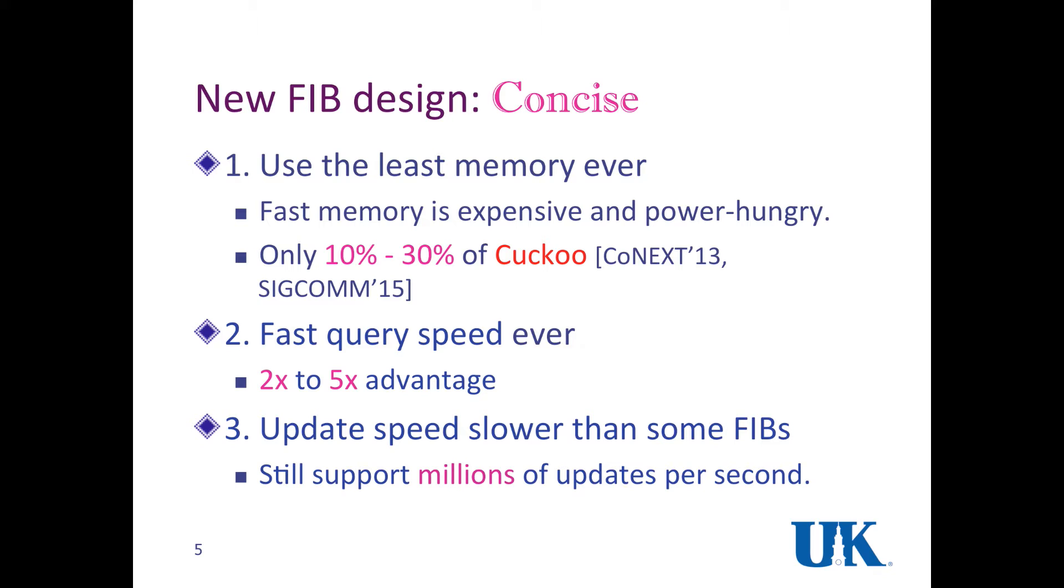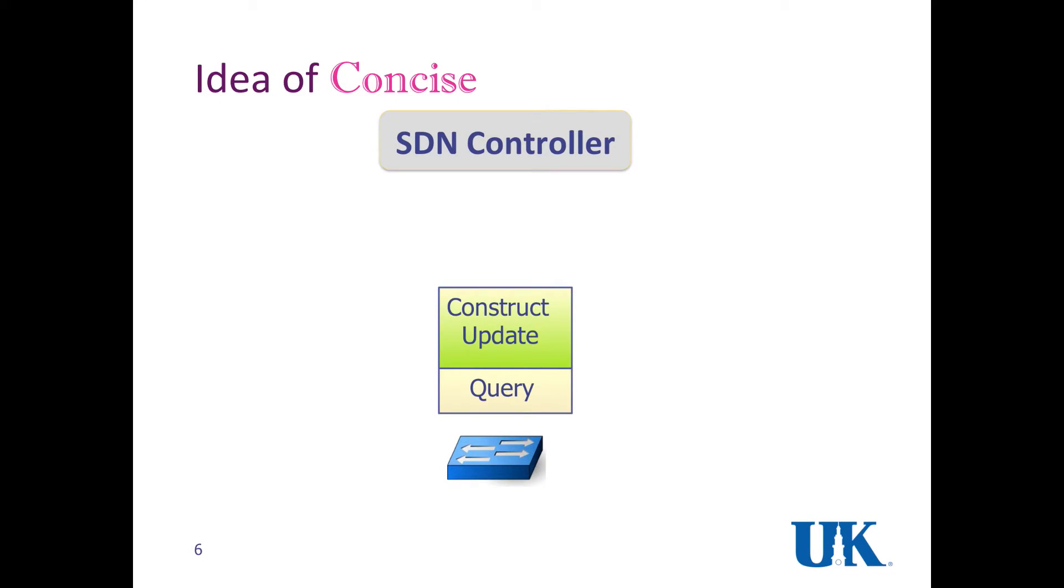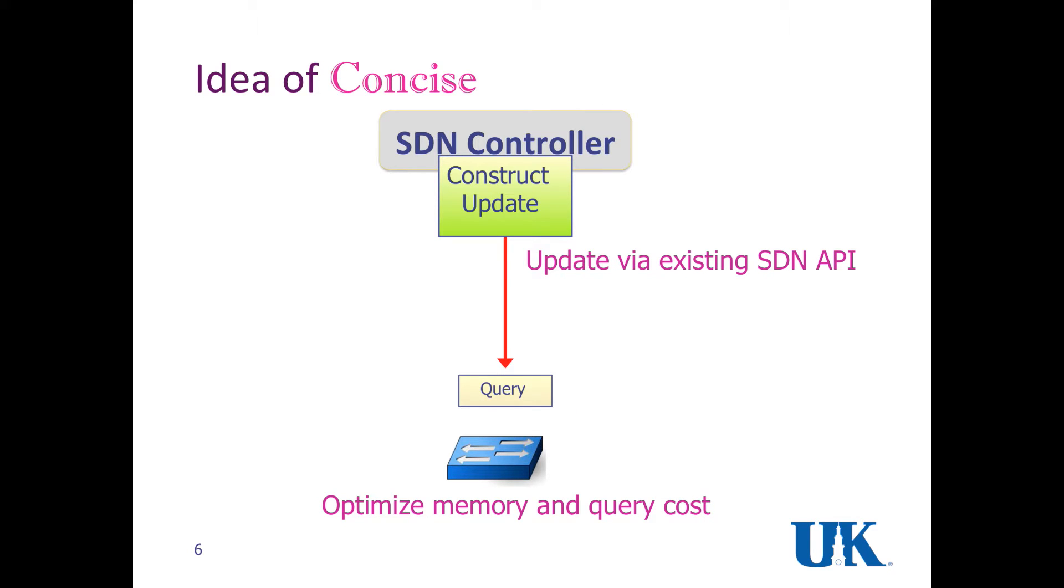However, the update speed of our FIB is slightly slower than some FIBs, but it still supports millions of updates per second. The general idea of concise is that we consider FIB as a data structure, and a data structure always consists of construction and update components and query components. Our idea is to move the construction and update components to the SDN controller and only keep the query component on switches or in the data plane. The updates can be communicated between the controller and the switches using the standard SDN API, and we can do our optimization on the memory and queries cost in the data plane.